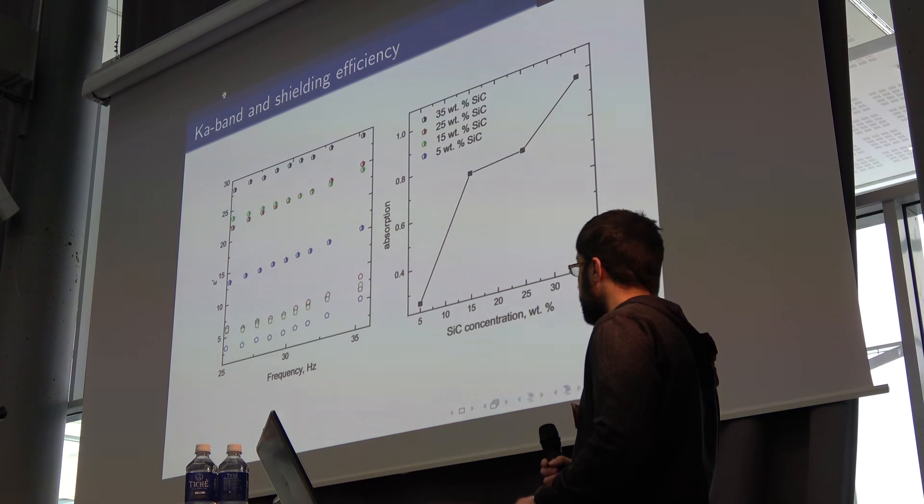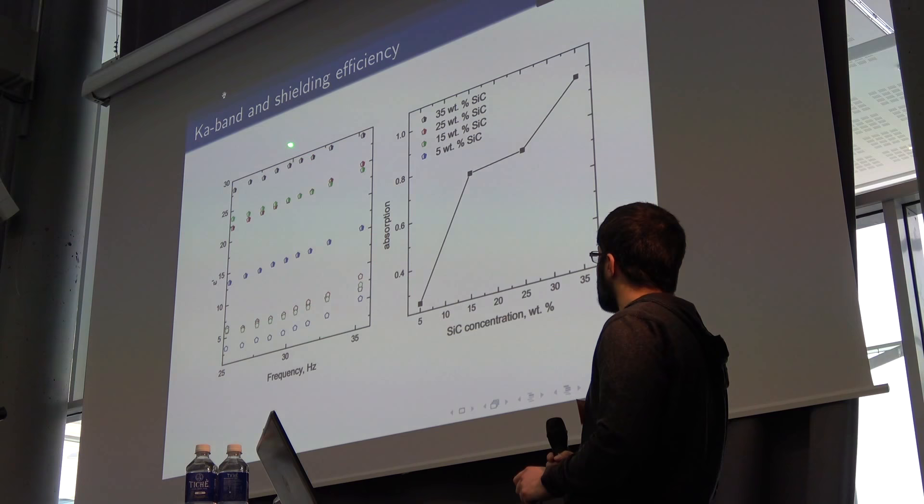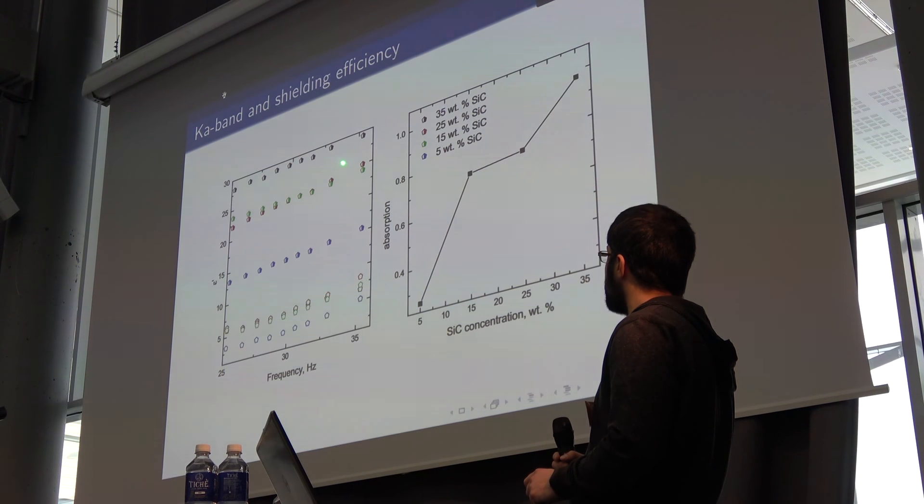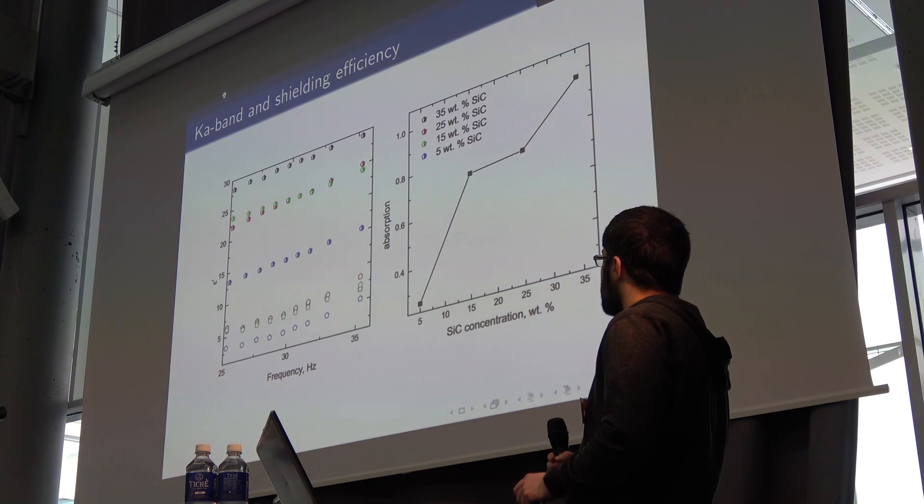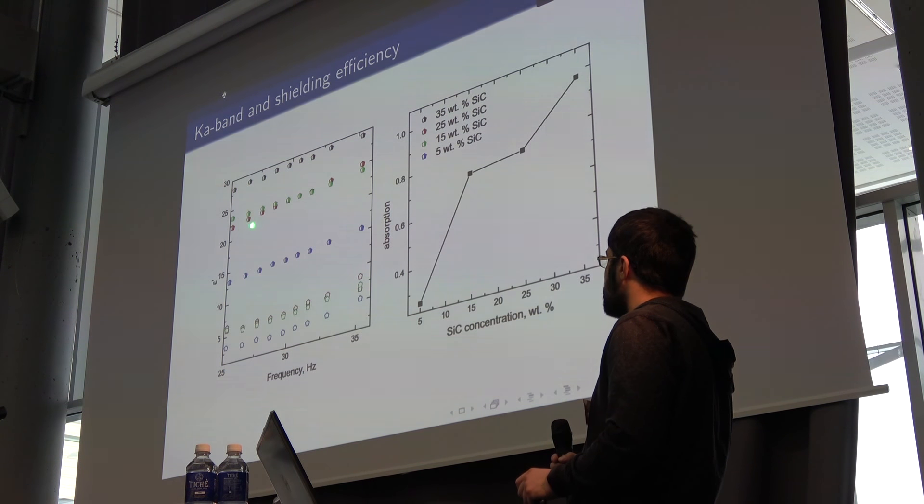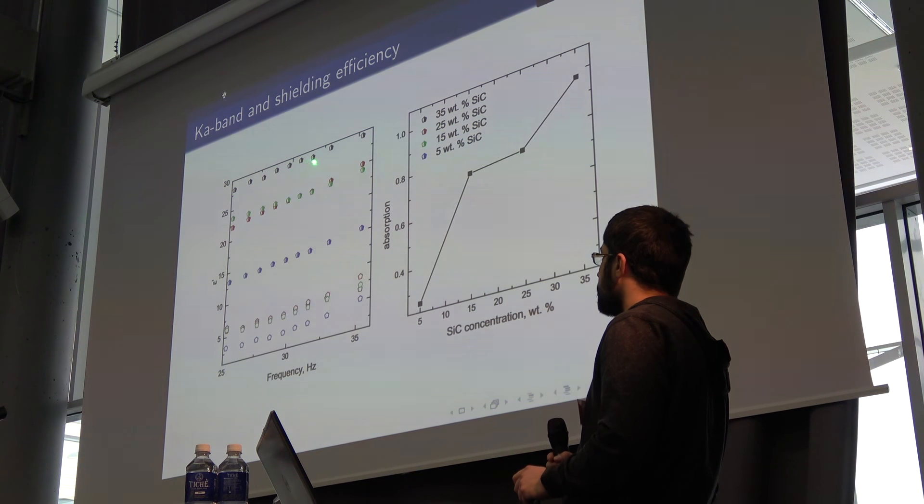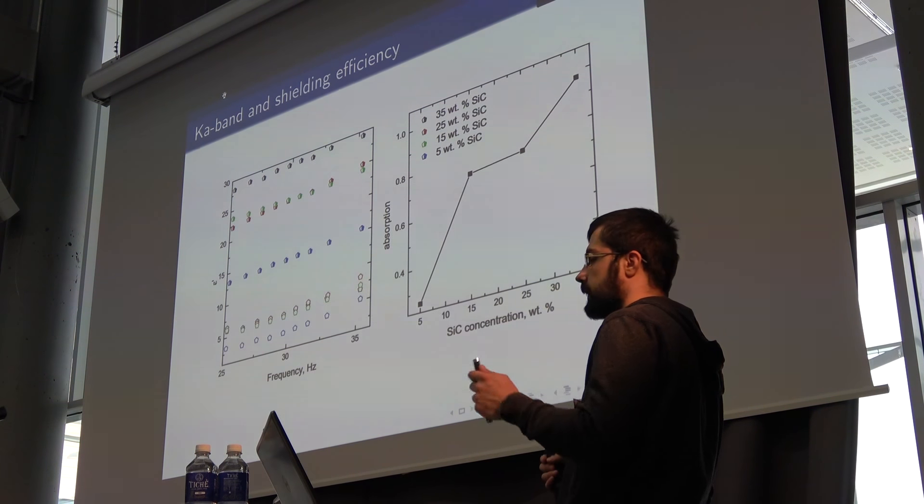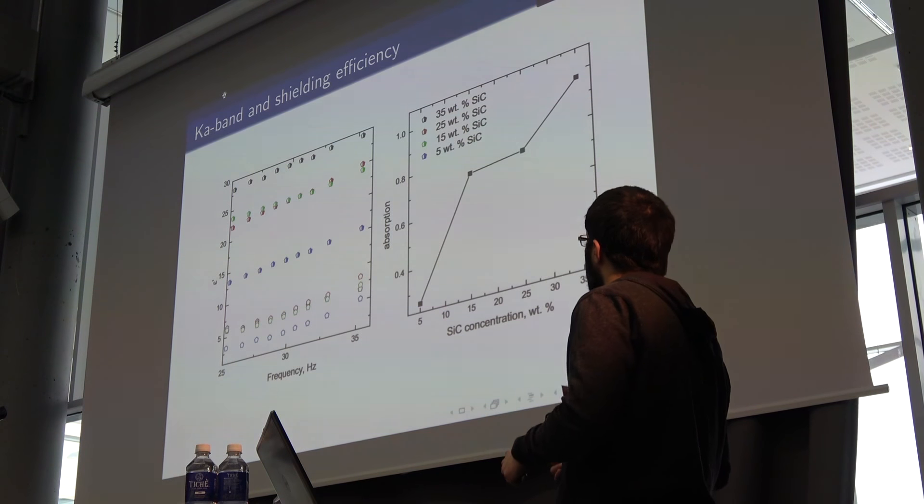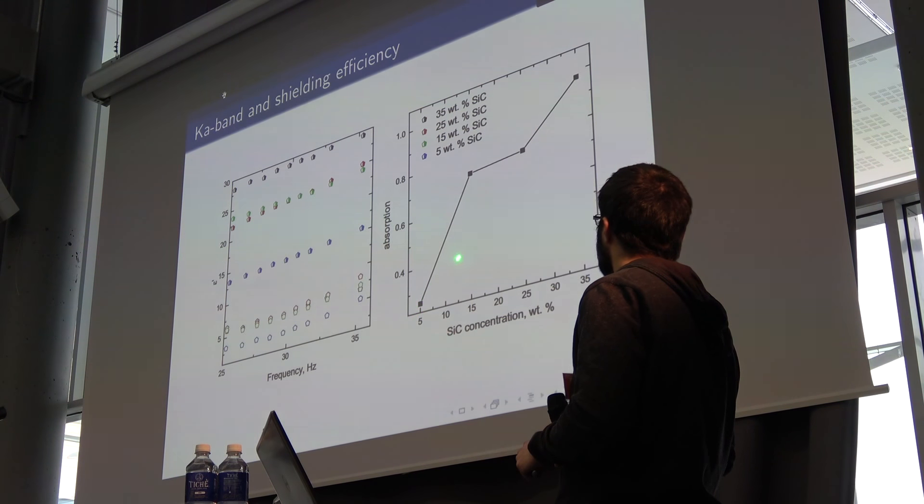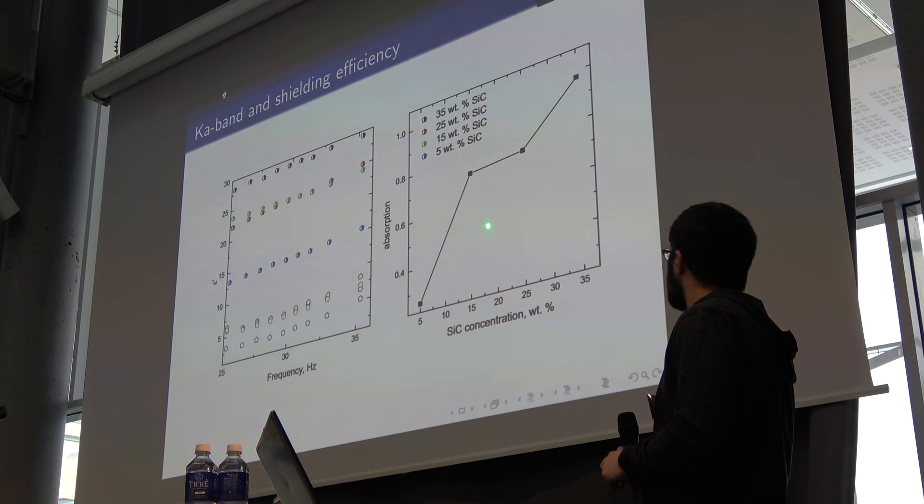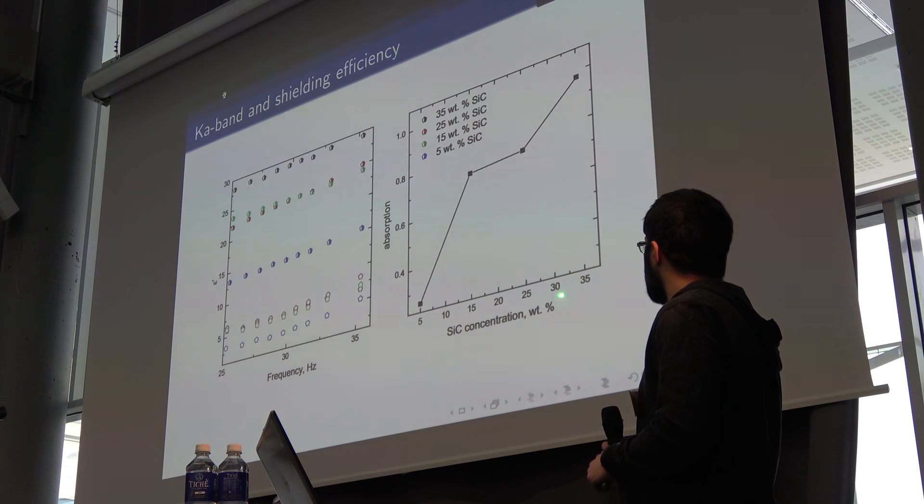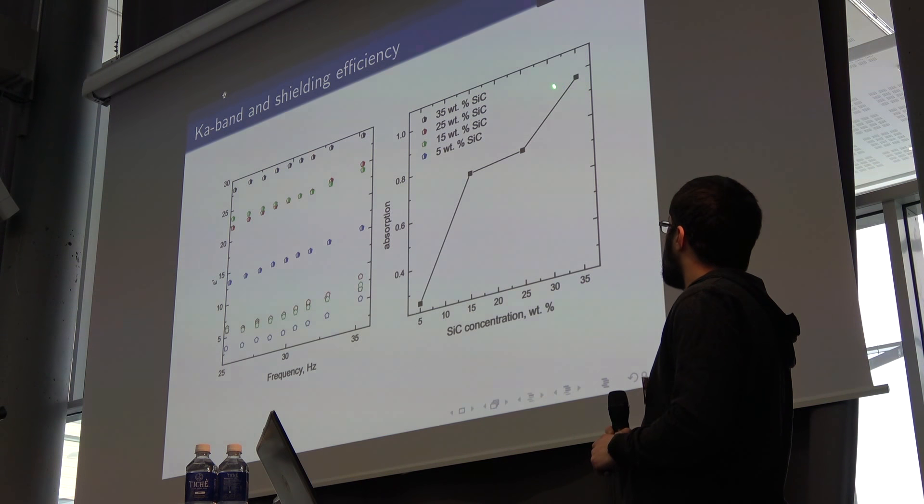Here are the results for the high frequency range, K band in this case. Here is the electric permittivity, and it should be noticed that it is quite high. Even carbon nanotubes embedded in the same ceramics demonstrate lower results. Results for absorption calculation are presented here. We see that 35 weight percent of silicon carbide whiskers demonstrate very high absorption ability, up to 97 percent.